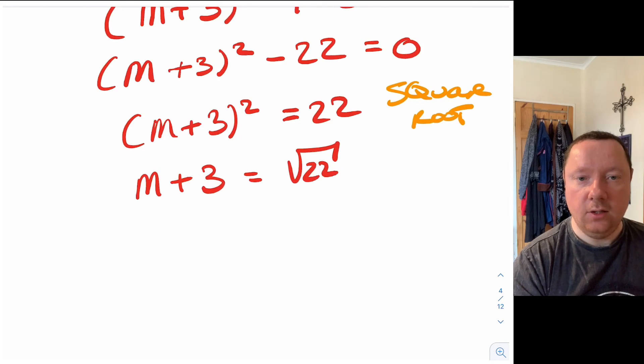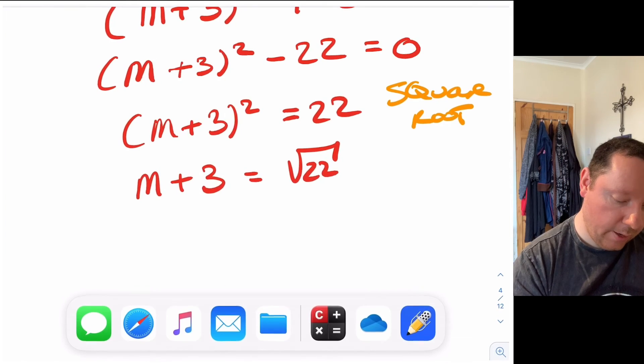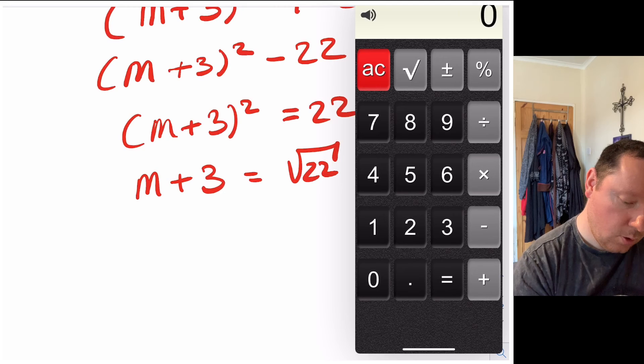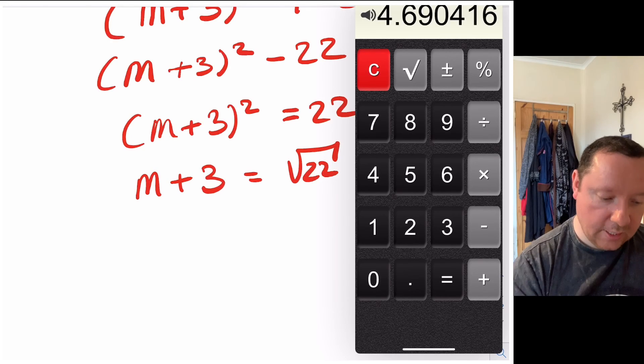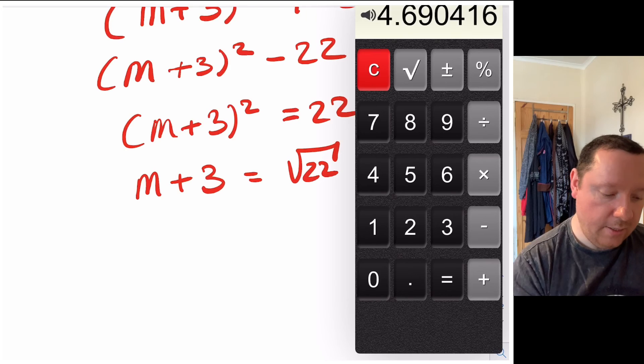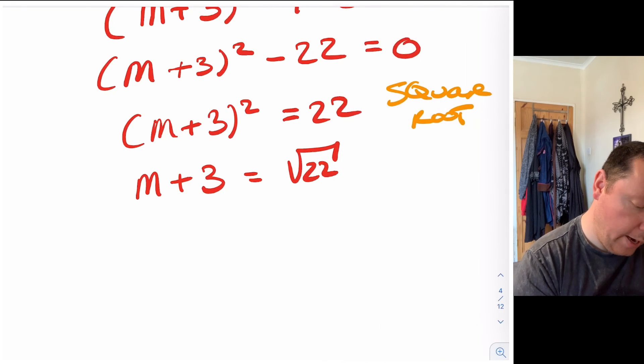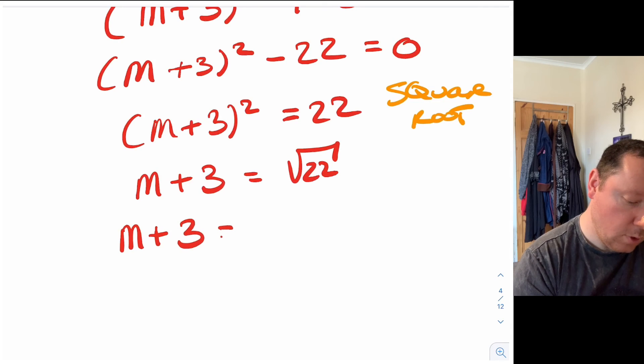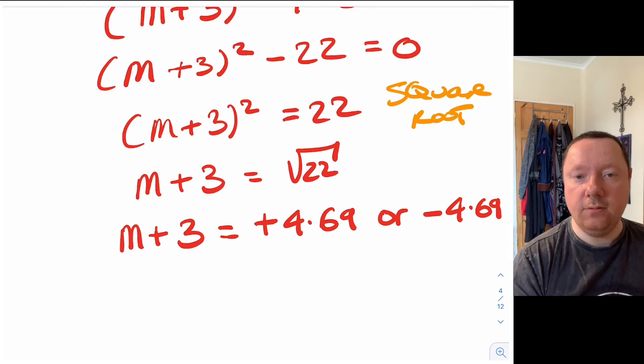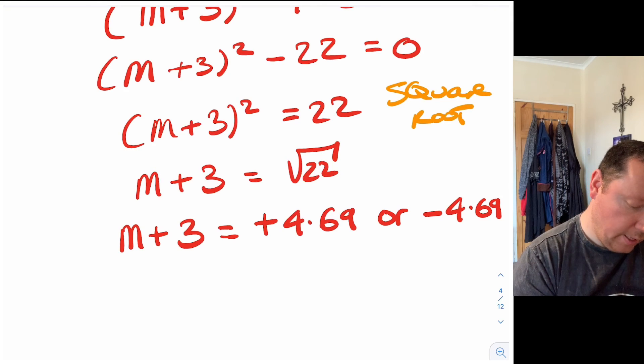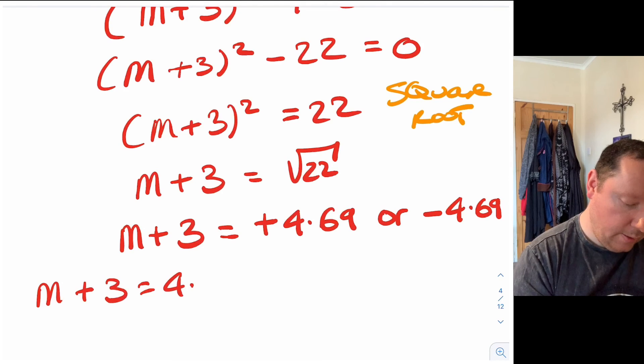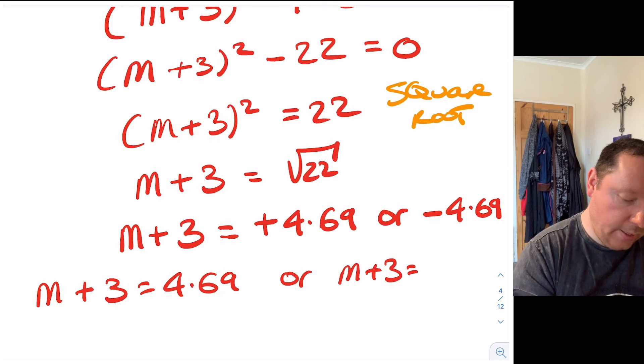And this is where we now need our calculator because it's not a whole square number. Square root of 22 is 4.69 with a bunch of other numbers. 4.69 will be fine. So m plus 3 remember equals either positive 4.69 but also negative 4.69 because you can always do the negative times negative to get the answer as well. So that means that m plus 3 equals 4.69 or m plus 3 equals minus 4.69.